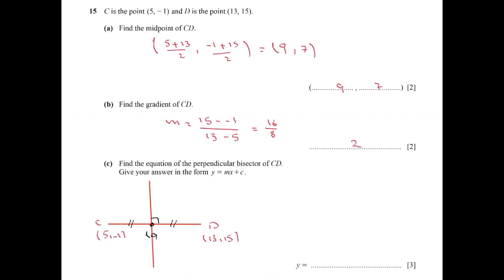The midpoint is (9, 7). The gradient of CD is m = 2, so the gradient of the perpendicular bisector will be negative one half — the negative reciprocal of the gradient of CD. To find the equation: y = mx + c becomes y = -½x + c.